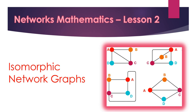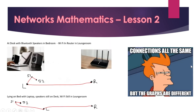Hey, this is Mr. Pascoe with lesson two on networks. In this lesson we're talking about isomorphic network graphs. All four of these graphs are in fact isomorphic network graphs. It means that you've got a network that's the same components connected together the same way, but the positions and shape of the network is different.